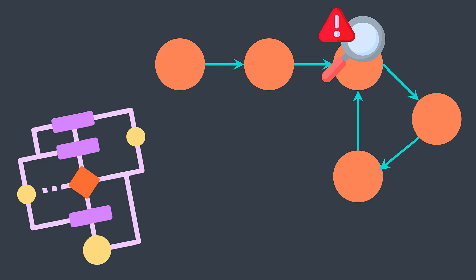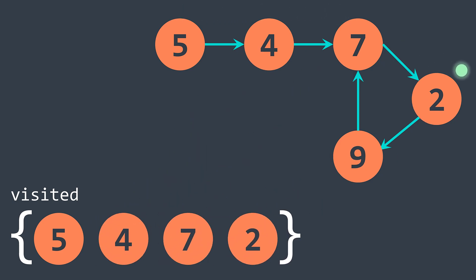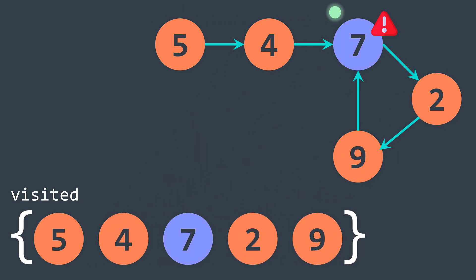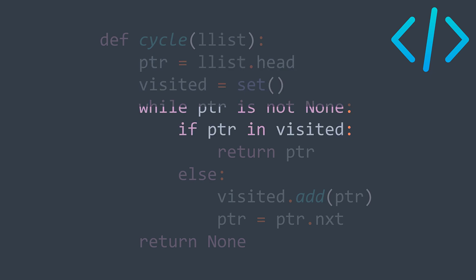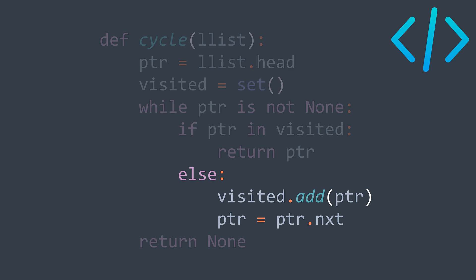The first solution that may come to mind is to use a set of visited nodes. If we step on a node that is already in the set, it means we've seen it before, so there is a cycle and we return that node. In code, we put a pointer on the head, create a set of visited nodes, then while the pointer is not null, if we find it in visited we return it. Otherwise we put the actual node in visited and move to the next one. After the loop, if the pointer became null without finding an already visited node, there is no cycle and we return null.